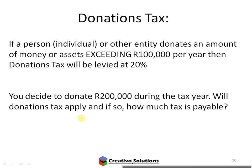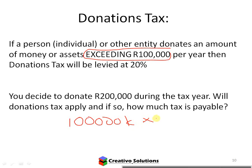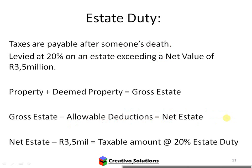Regarding donations tax: even if you donate goods, you still have to pay tax. You only pay donations tax on the amount exceeding R100,000. So if you donate R200,000 during the tax year, donations tax applies. The calculation: R100,000 excess times 20% equals R20,000 tax. This will be covered further in the estate planning chapter.